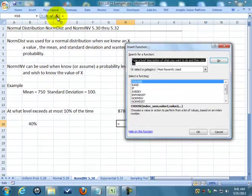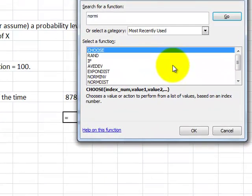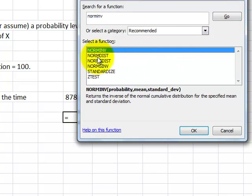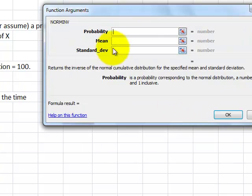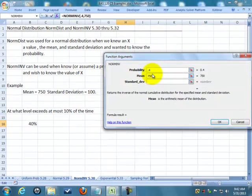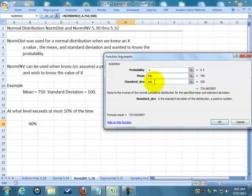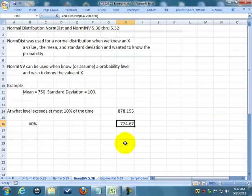I could go NORMINV and find it and say the probability 0.4, the mean we said was 750, the standard deviation is 100. This will give us a value where 40% of the time it's this number or left. Because remember, our cumulative curve goes from left to right. So it's 724. So 40% of the time it's 724 or less, which makes sense because our mean is 750.